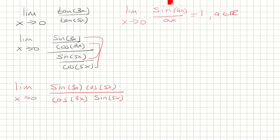But in order to do that, we need to have ax in the denominator. So I'm going to multiply the top and bottom by 1 over x. I want sine 3x over 3x and sine 5x over 5x, so I'm multiplying by 1 over x, which is the same as 3 over 3x, and similarly 1 over x is the same as 5 over 5x.